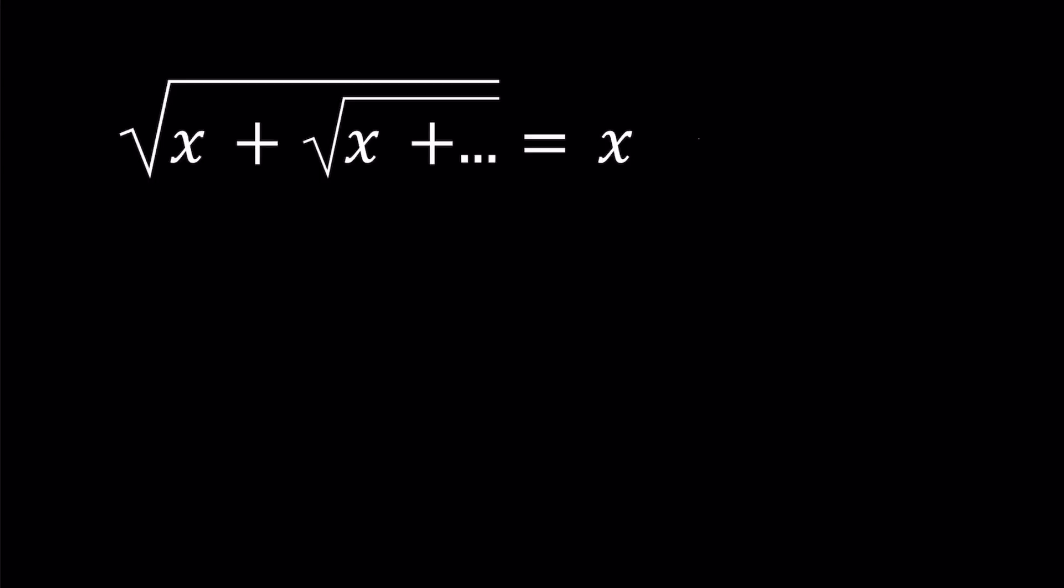We have the square root of x plus the square root of x plus the square root of x dot dot dot just equals x. This goes on forever. We have infinitely many x's in there, and we're going to find out for which x value or values this equation is going to be true.